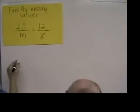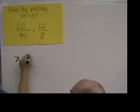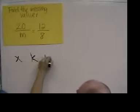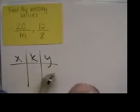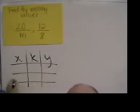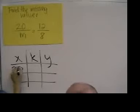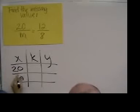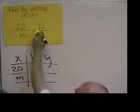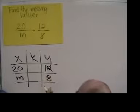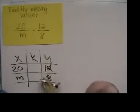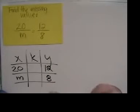We're going to set up an X, K, Y table. We're going to put in 20 and m on the left, and we're going to put 12 and 8 on the right in the Y column.